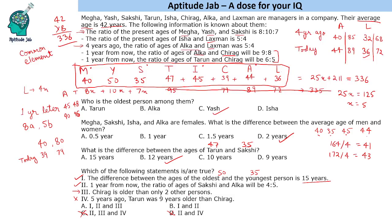Statement 3: Chirag is older than only two other persons. Chirag is 39, and he is older than Sakshi (35) and Lakshman (36). So Statement 3 is also correct, giving the answer as Option A. The key strategy here is to check the options and eliminate rather than verify all statements. As a final check: one year from now, Sakshi is 36 and Alka is 45 — ratio 4:5, correct. Also, the age difference between Tarun and Chirag is 8 years, which remains constant regardless of time.